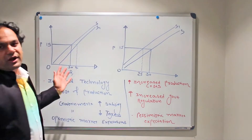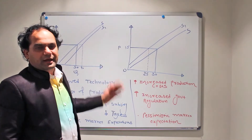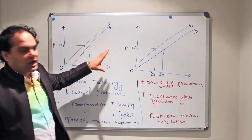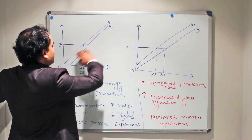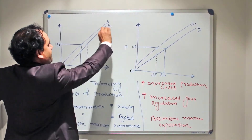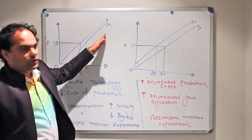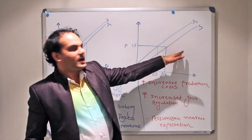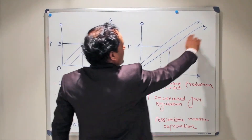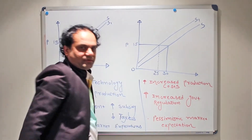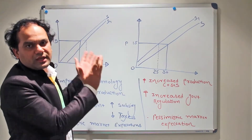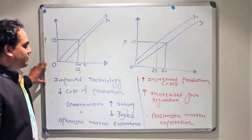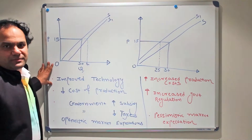Let's evaluate when that happens. Here are two scenarios. This is our original supply curve S. In the first scenario it has moved to its right, and in the second scenario our original supply curve has moved to its left. Let's evaluate when these two things happen.